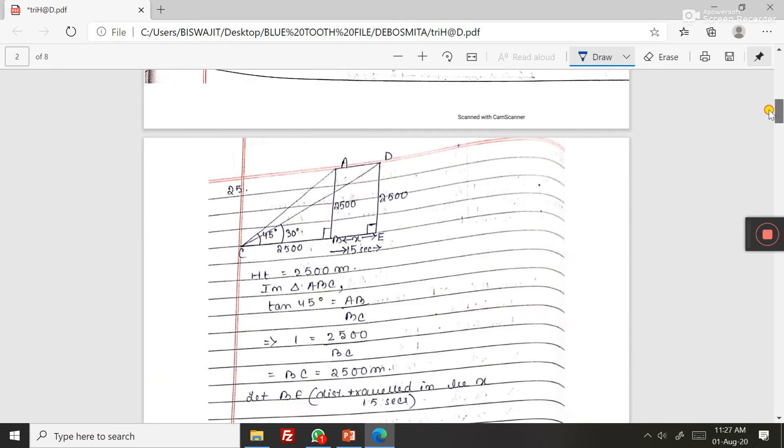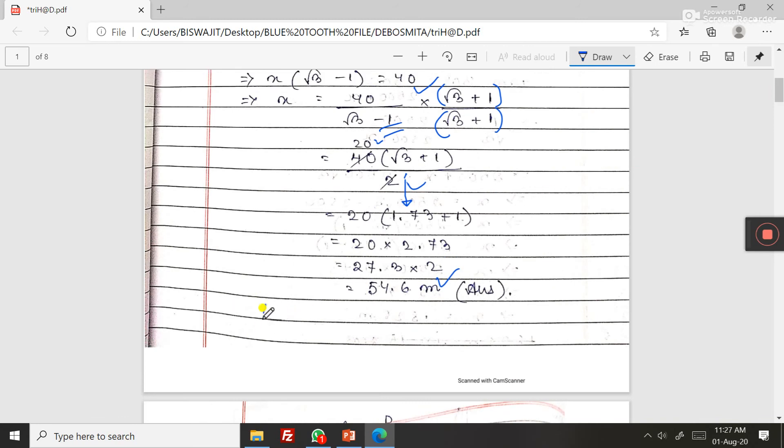So we are getting height equal to 40 plus 54.6, that is equal to 94.6 meters. This is the answer.